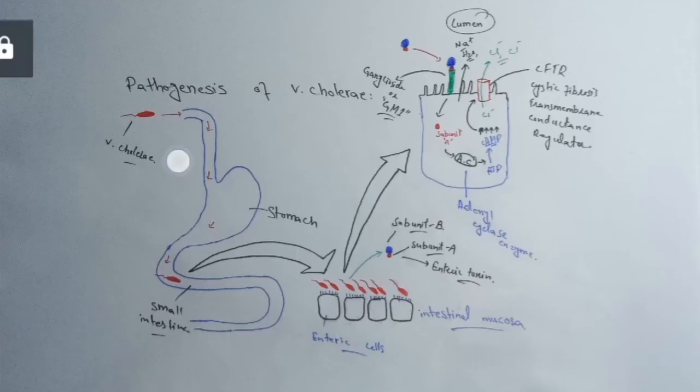Let me repeat it. This is Vibrio cholerae bacteria. It enters from the mouth and then into the stomach, from where it enters into the small intestine. These bacteria can't enter into the enteric cells, but their toxins called enterotoxins can enter. Here this enterotoxin having subunit A and B will bind with the GM1 receptor on the enteric cell, through which subunit A will endocytose into the enteric cell.